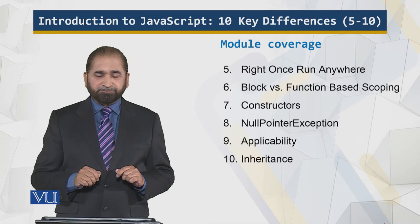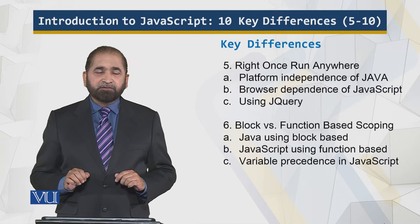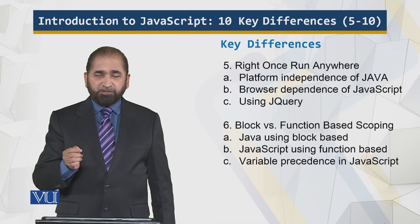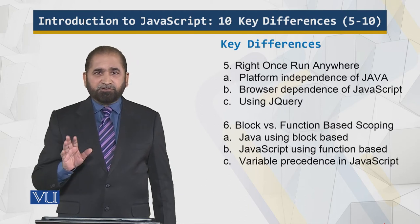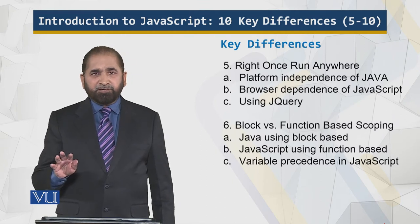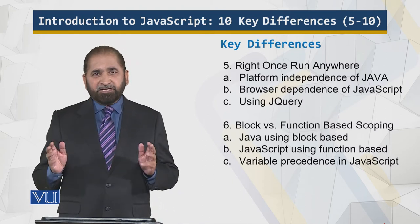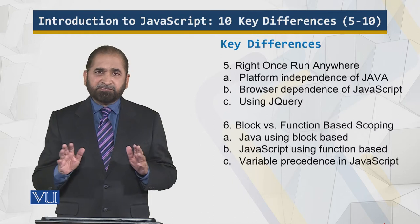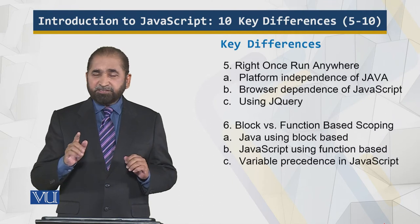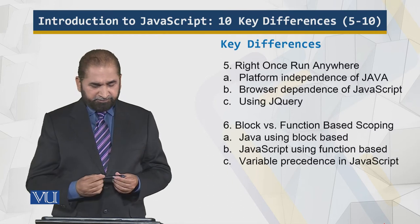Write once run anywhere — platform independence of Java. Why is Java platform-independent? Because Java is bytecode, and that bytecode runs theoretically on every platform. The look and feel of the application, the functionality, everything is consistent independent of the platform. But that is not the case for JavaScript, because JavaScript is browser-dependent.